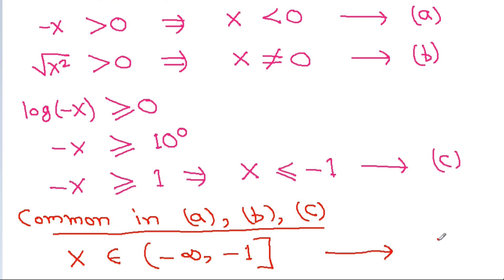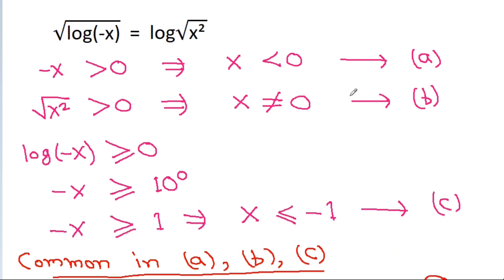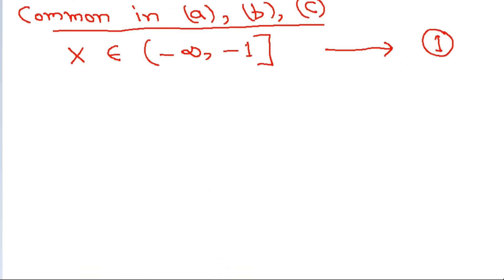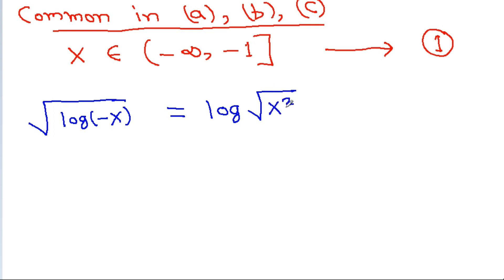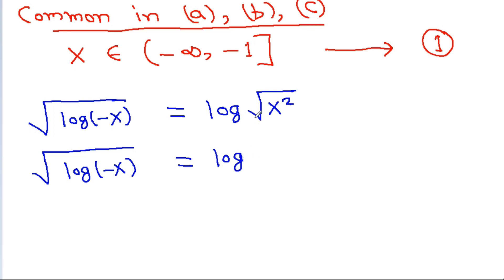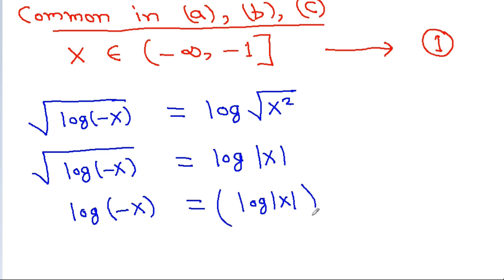We have given that square root of log(-x) equals log of square root of x squared. Note that square root of x squared equals mod x. If we square both sides, we get log(-x) equals log(|x|) squared.